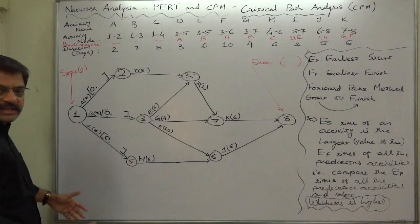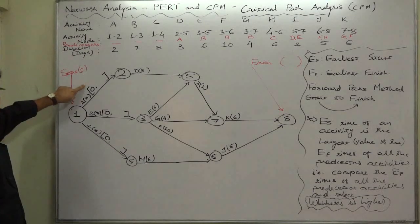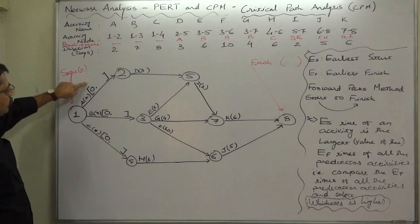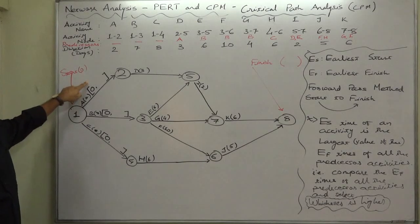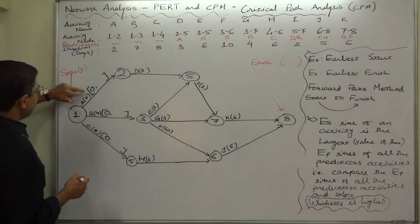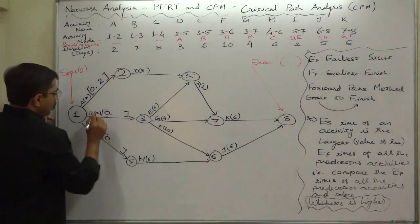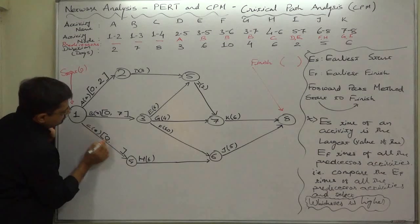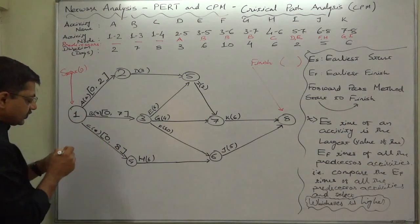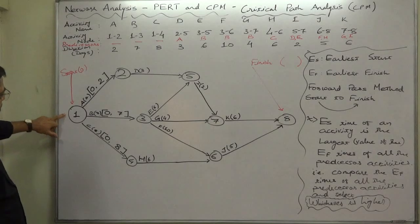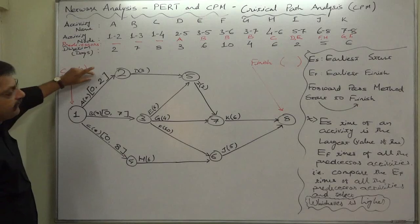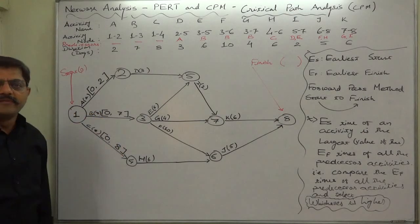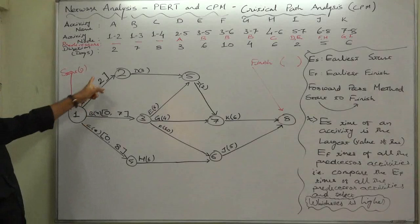The result is earliest finish time — at what time, at the earliest, the activity can be finished. It is very natural: add the duration to the start time, the result will be earliest finish time. So for A it will be zero plus two = two, for B it will be zero plus seven = seven, and for C it will be zero plus eight = eight. That means after starting the project: A will be finished after two days, B after seven days, C after eight days. These are the earliest finish times of these three activities.